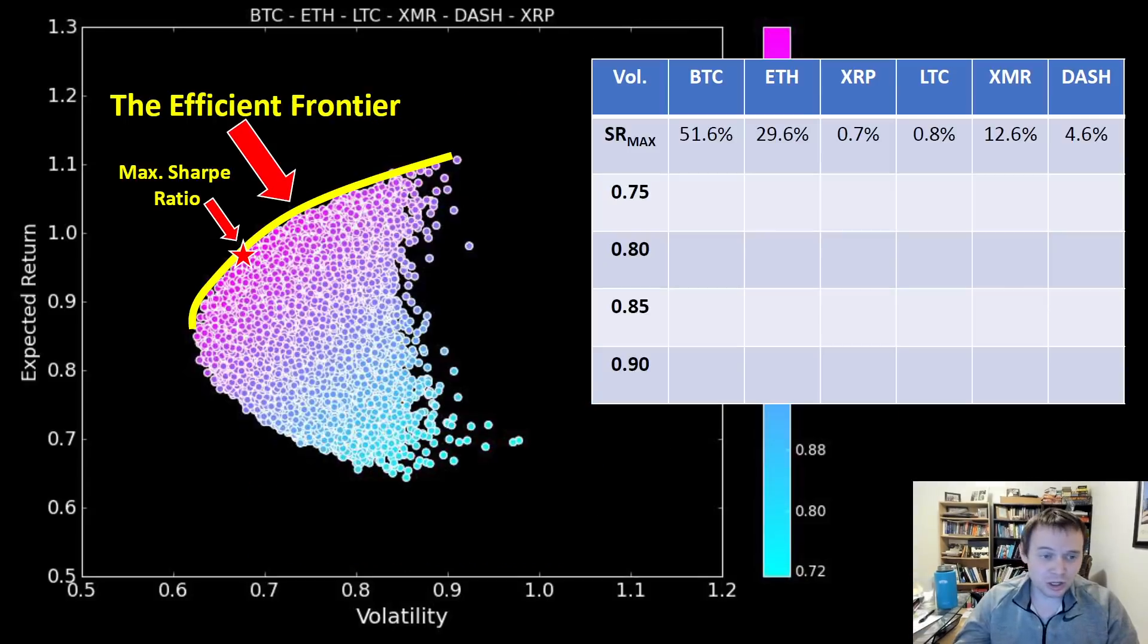If you look at the portfolio of these six coins which maximize the Sharpe ratio on the efficient frontier, it actually corresponds to 51.6 Bitcoin, 29.6 Ethereum. So essentially you're looking at a portfolio that's made up of 80 Bitcoin and Ethereum.